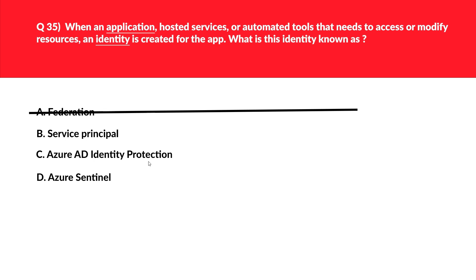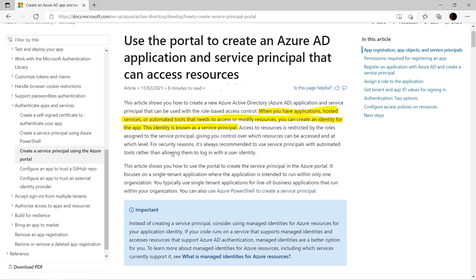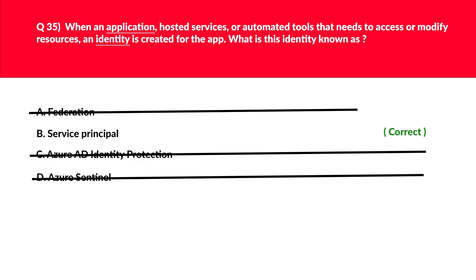Azure AD Identity Protection seems like just a distractor because the question is about something else. Option D, Azure Sentinel, is totally off-topic as it's related to security — AI-based and cloud-native SIEM — so we'll reject it as well. The official documentation states that when you have an application, automated service, or automated tool that needs to access or modify resources, you can create an identity for the app, and this identity is known as a service principal. We got our answer and we'll log B.